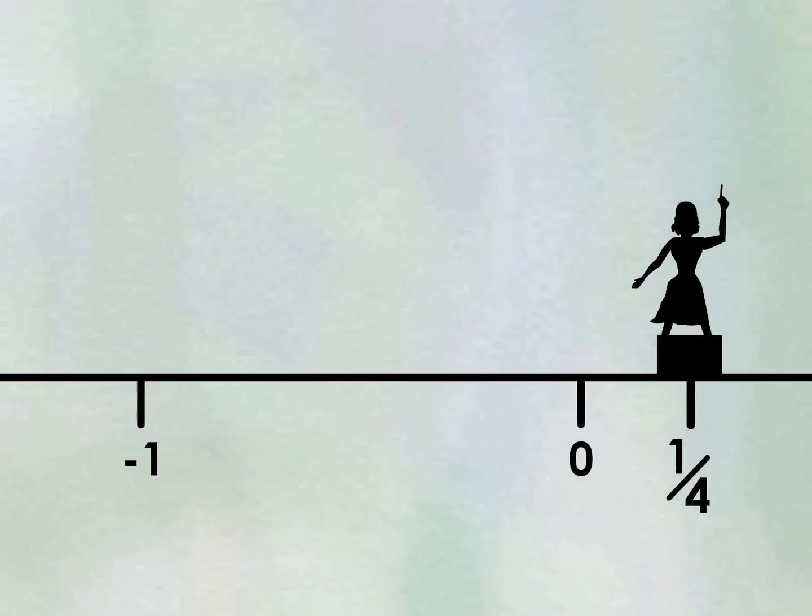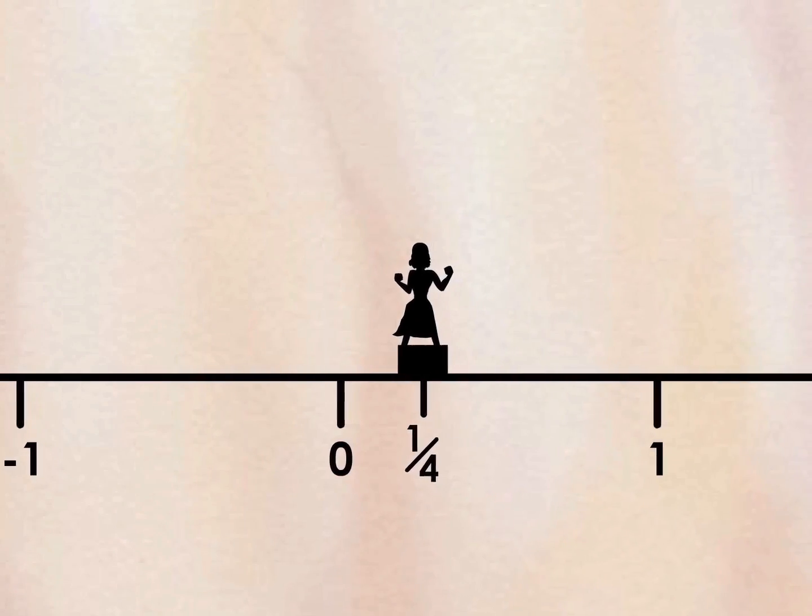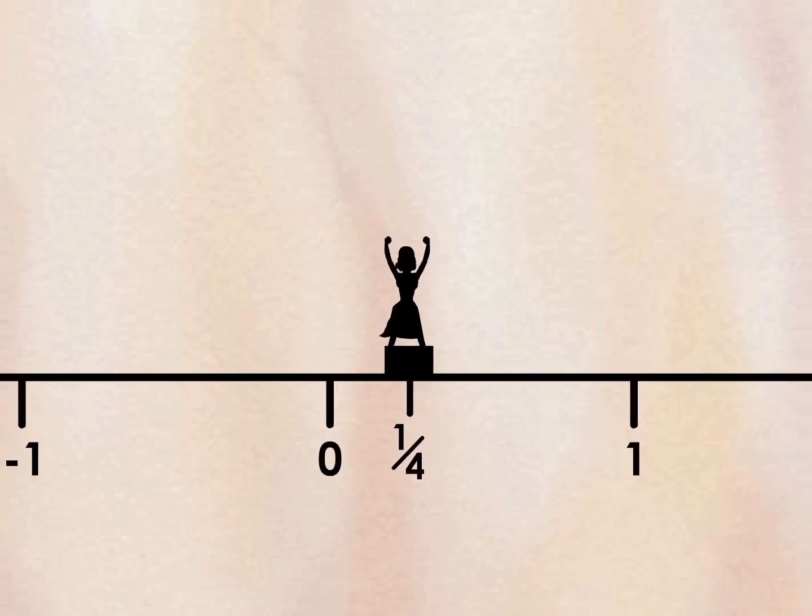The number line isn't a social structure. It is simply a line that indicates position among and between numbers. And we are all on that number line, even if we aren't whole numbers.